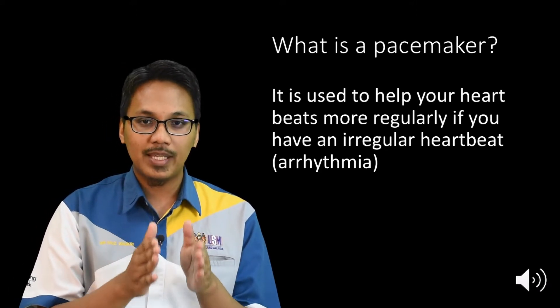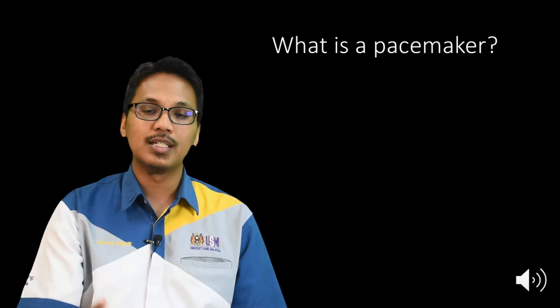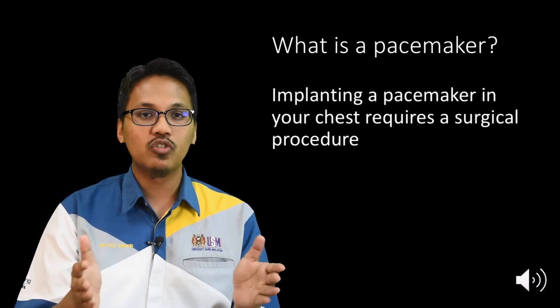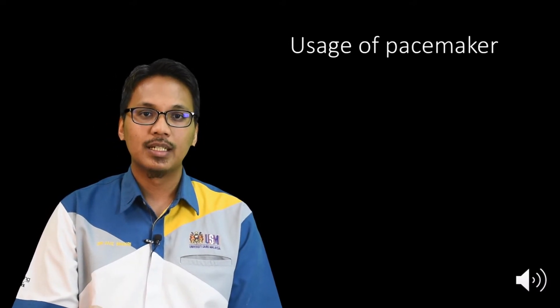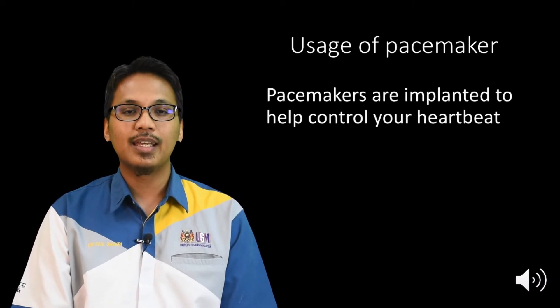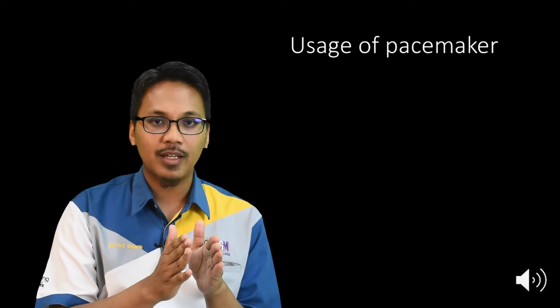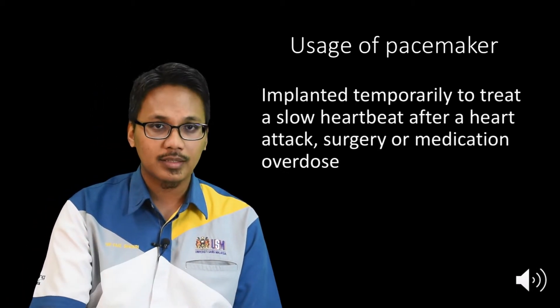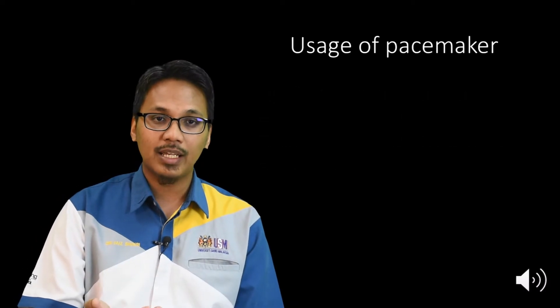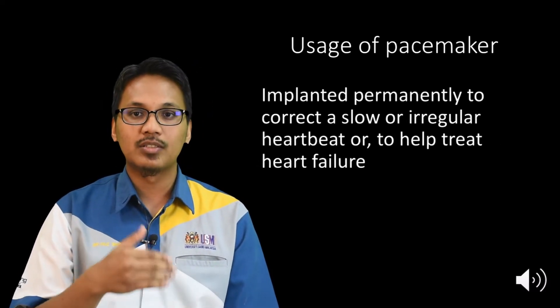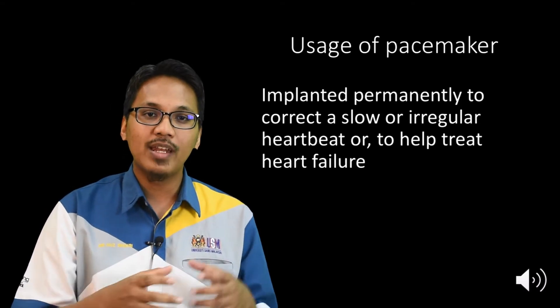To implant a pacemaker in your chest it will require a surgical procedure. So what are the uses of a pacemaker — why do people put a pacemaker in a particular patient? A pacemaker can be implanted temporarily to treat a slow heartbeat after a heart attack, surgery, or due to medication overdose. On the other hand, it can also be implanted permanently to correct a slow or irregular heartbeat, or in some cases to help treat heart failure.